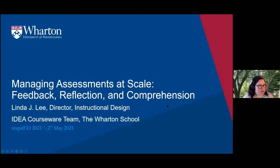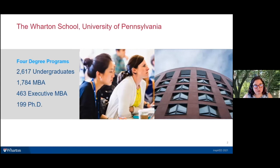The Wharton School is the business school of the University of Pennsylvania. Within Wharton, we have four degree programs: an undergraduate BS in Economics enrolling about 2,600 students, an MBA program enrolling about 1,800 students — probably what we're best known for — an executive MBA program with locations in Philadelphia and San Francisco, and about 200 PhD students.